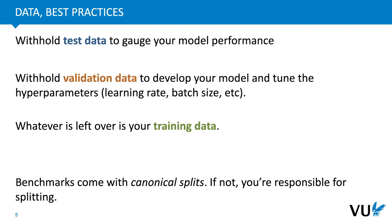If we want to gauge the performance of our model, we need to withhold some data — we need to test the model on data it hasn't seen during training. We withhold some part of our data and call this the test data. Because it's important to use the test data only once, we then withhold another set called the validation data, which allows us to tune hyperparameters like the learning rate or the batch size. Once we've chosen all details of our model using the validation data, we can use the test data. Whatever is left over is our training data.